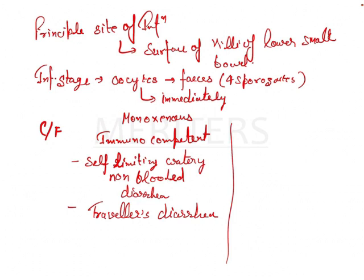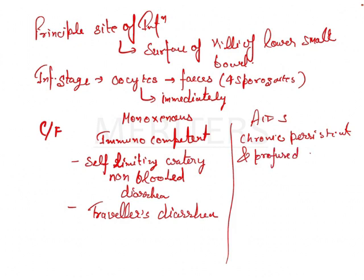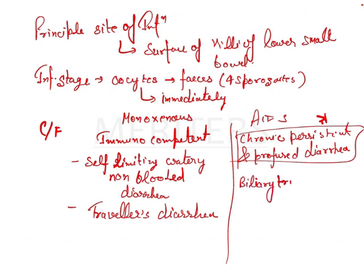In immunosuppressed patients, such as those with AIDS, you will see chronic, persistent, and profuse watery diarrhea. This is the key finding for this question. Due to involvement of the biliary tract, it can cause obstruction of the biliary tract because it causes papillary stenosis, and it can also cause cholecystitis.